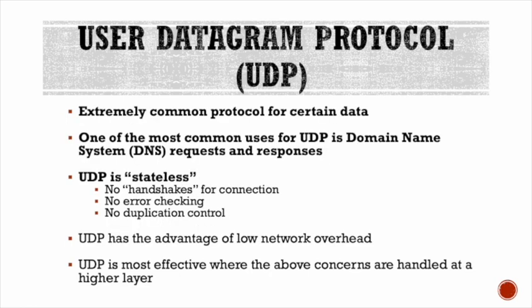UDP is an extremely common protocol for certain data. One of the most common uses for UDP is DNS requests and responses. UDP is considered stateless — no handshakes for connection, no error checking, no duplication — and has low network overhead. It is most effective where those concerns are handled at a higher layer of the OSI model.